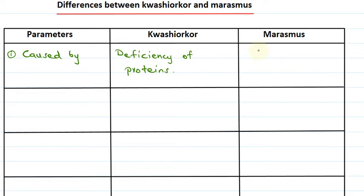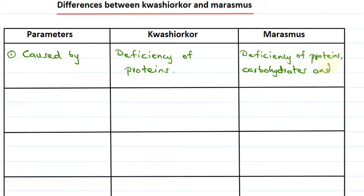Marasmus is caused by the deficiency of proteins, carbohydrates, as well as fats. The deficiency of proteins, carbohydrates, and fats causes the disease Marasmus, hence it is also a deficiency disease.